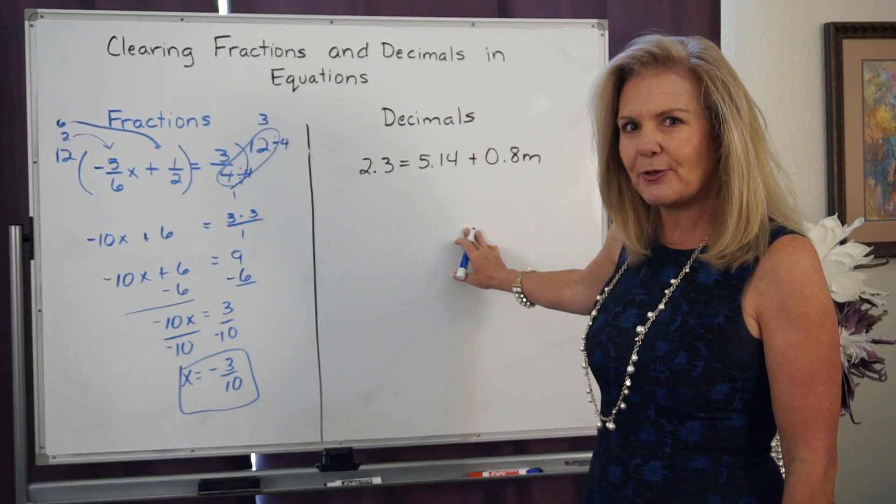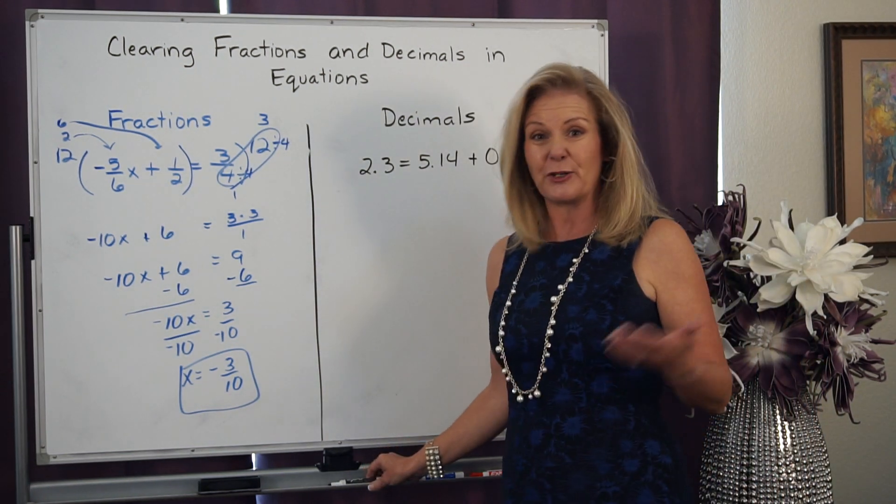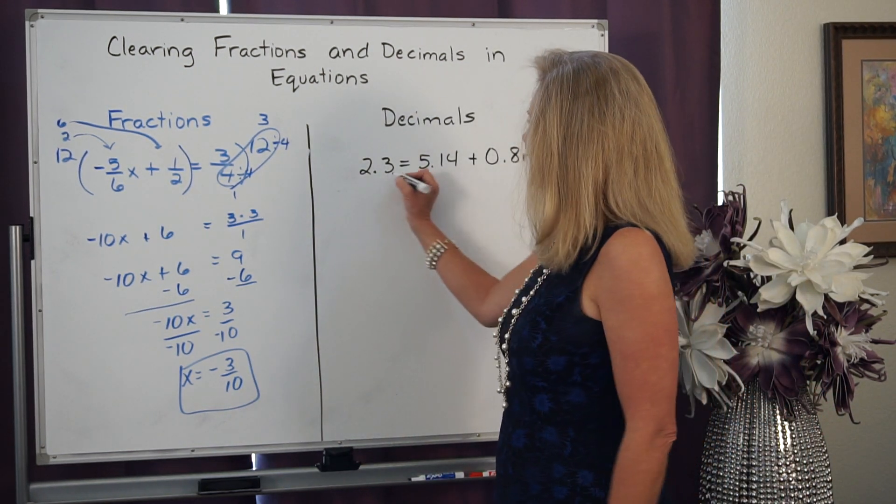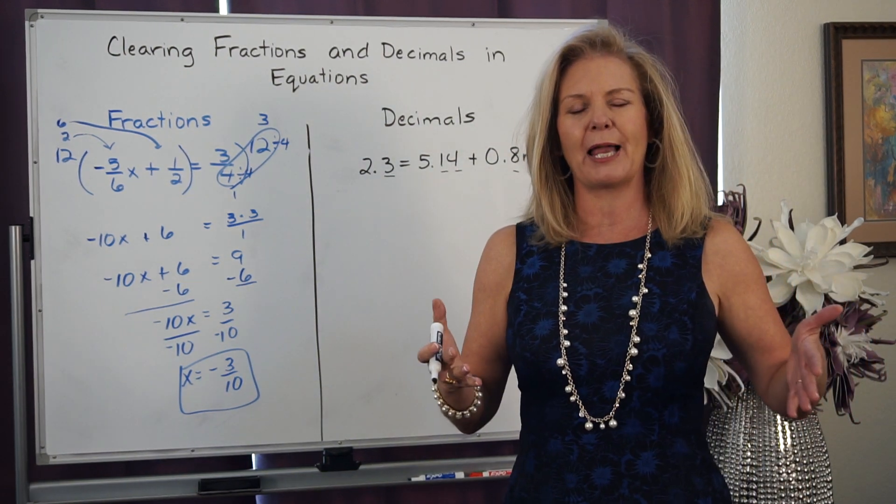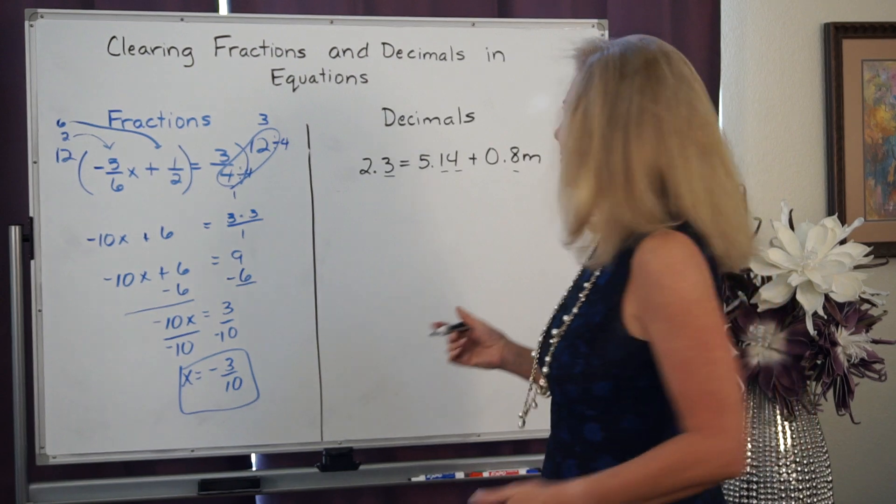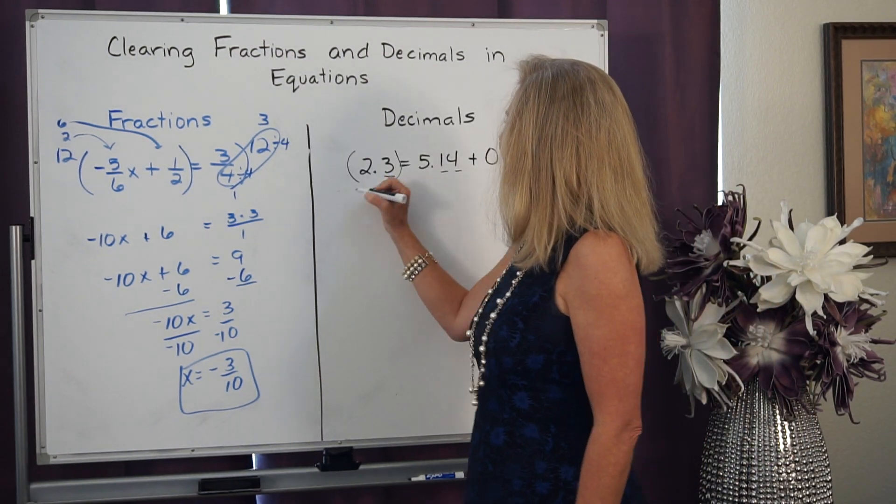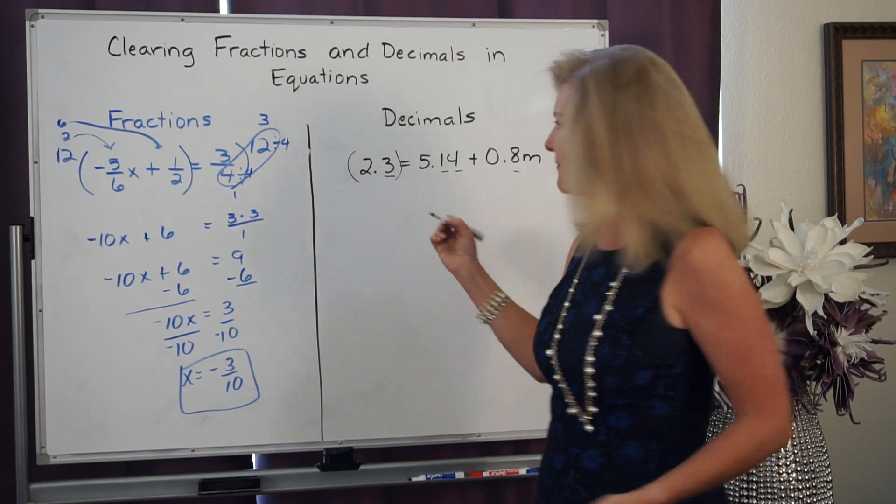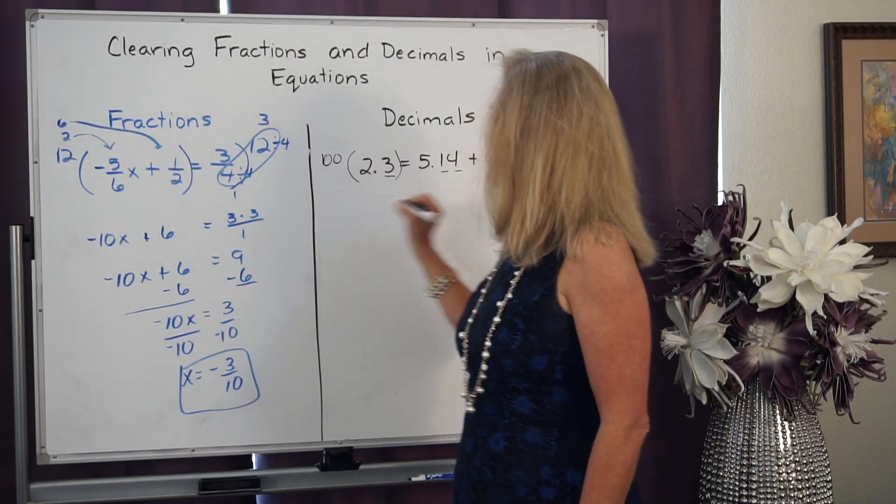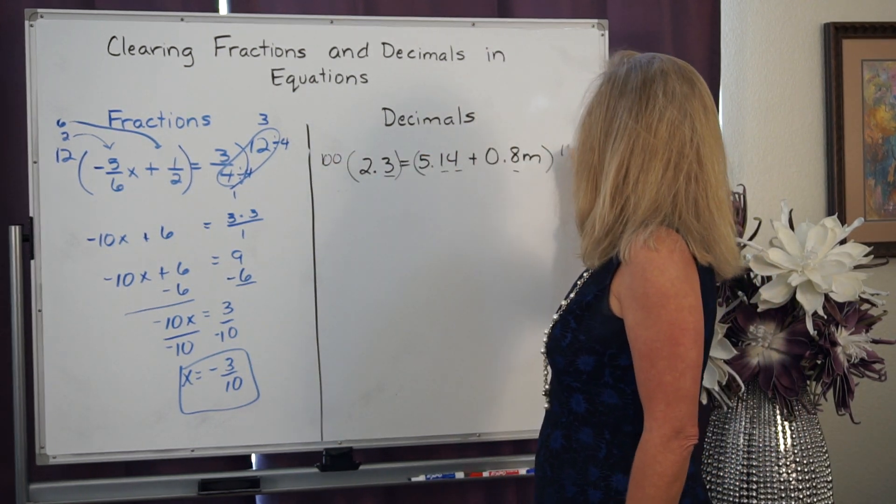We can also do that with decimals. And the way that we do that is we take a look at the place value of the decimals. And we're looking to multiply by the largest place value. So I can see I have a tenth, a hundredth, and a tenth. So I'm going to take the largest place value, which is 100. But I have to multiply both sides by that.